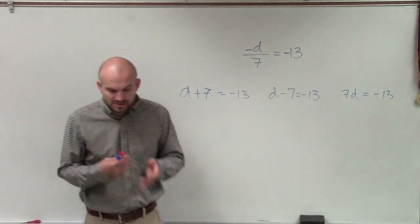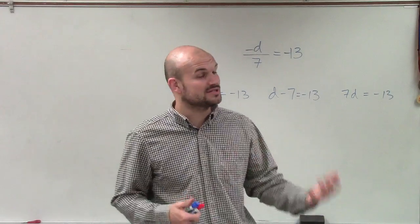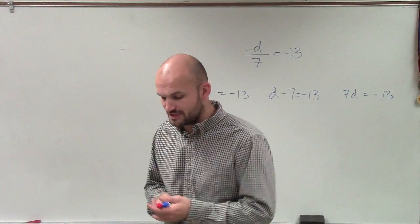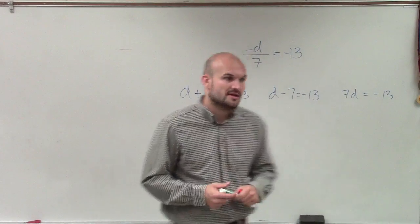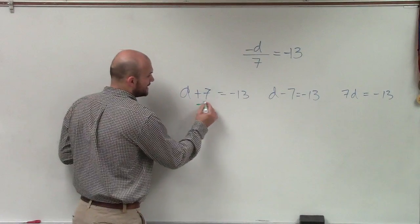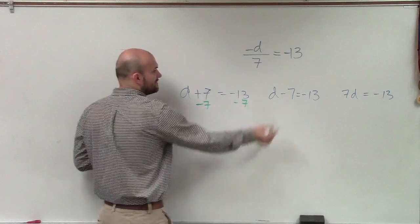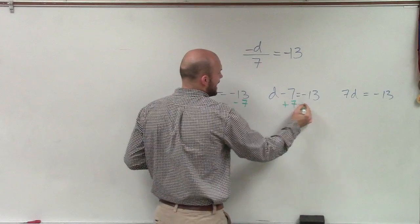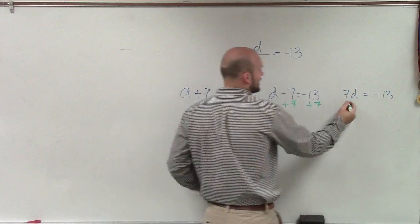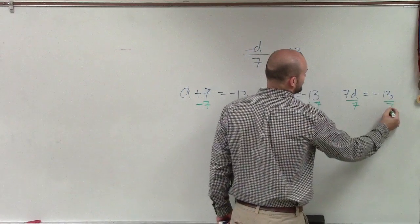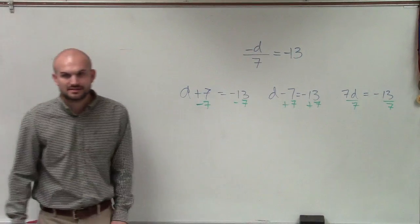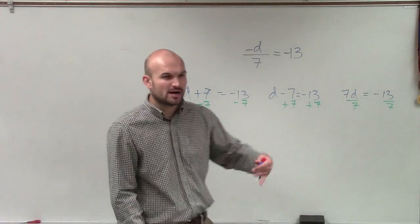When solving one-step equations and also when solving two-step equations, which we're going to go over today, we have to apply our inverse operations. That means if I'm adding, I need to subtract. If I'm subtracting, I need to add. If I'm multiplying, I need to divide. Does that make sense? You're undoing what's happening, and why are we undoing?